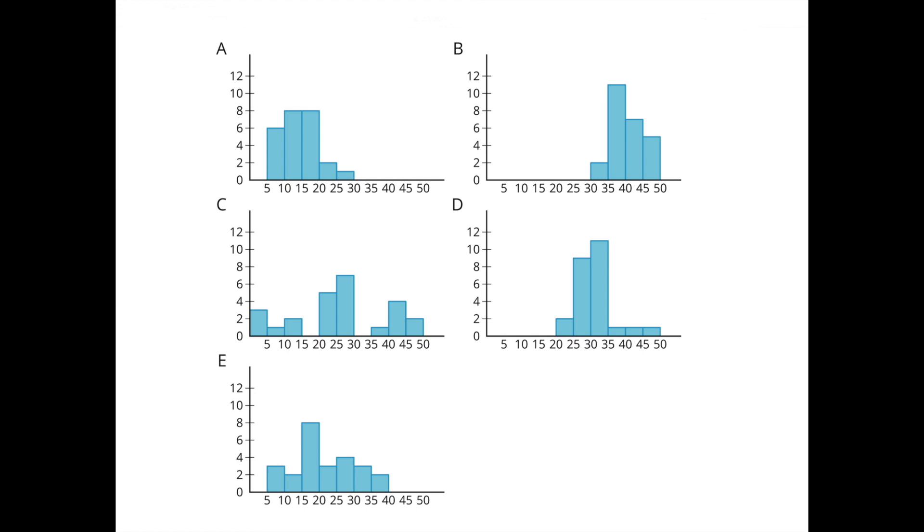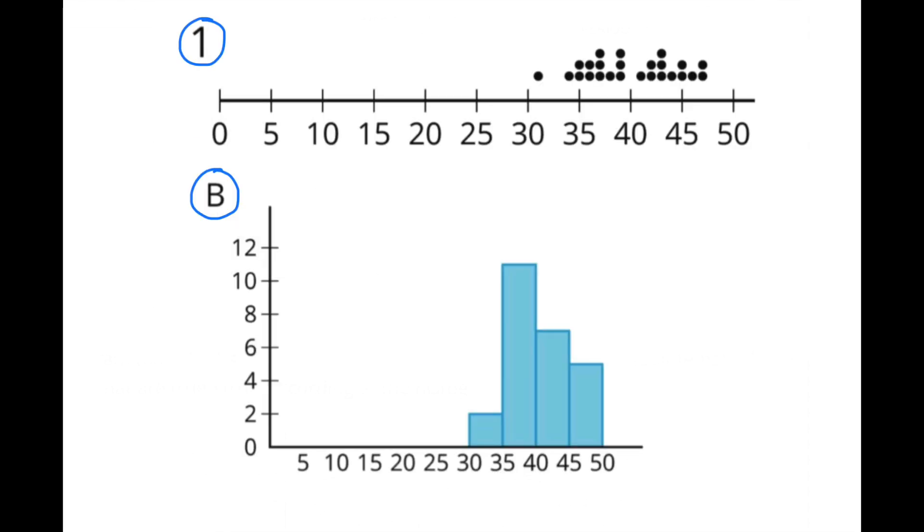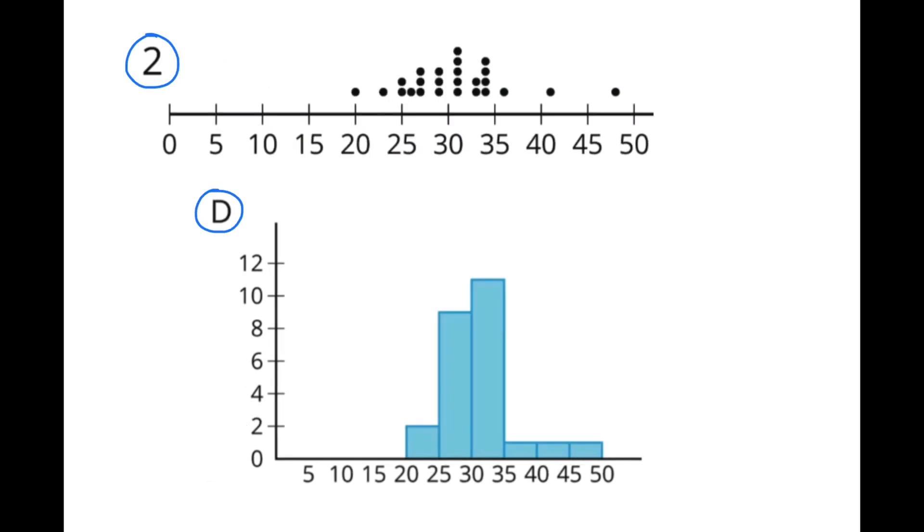Here's a look at histograms A through E and dot plots 1 through 5. Dot plot number 1 and histogram B are matches. They make a complete data set. Dot plot number 2 and histogram D are matches and they make a data set.